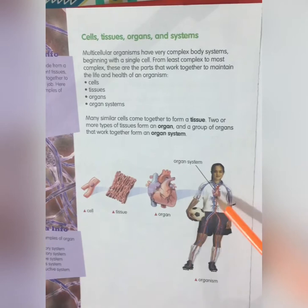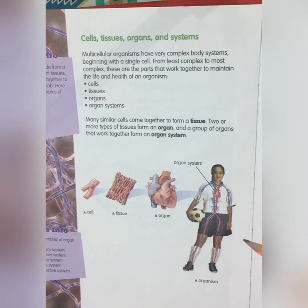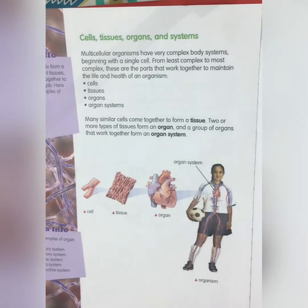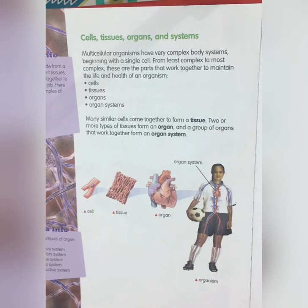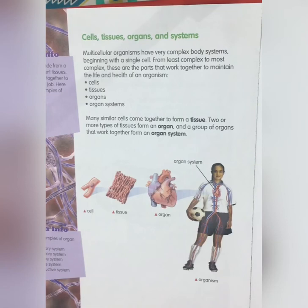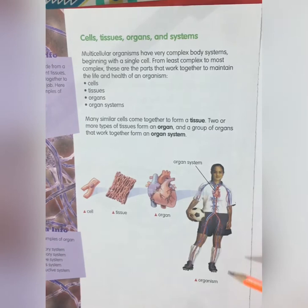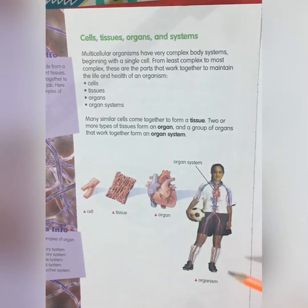Examples of organ systems include the circulatory system, respiratory system, digestive system, nervous system, and reproductive system. The circulatory system helps with blood circulation. The respiratory system handles inhaling and exhaling — the process of breathing. The digestive system manages the process of digestion. The nervous system controls your brain activities. The reproductive system controls the reproduction cycle. All these systems have their particular jobs and work together in an organism.